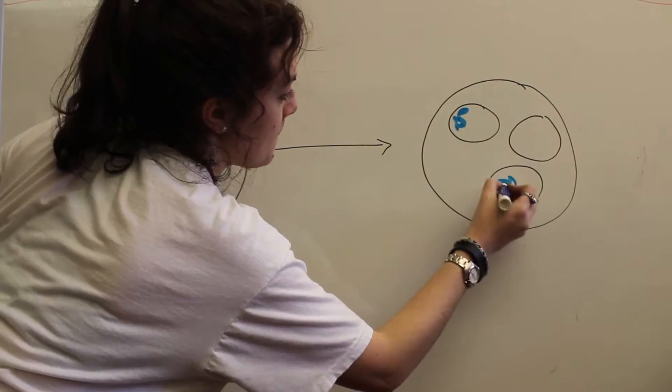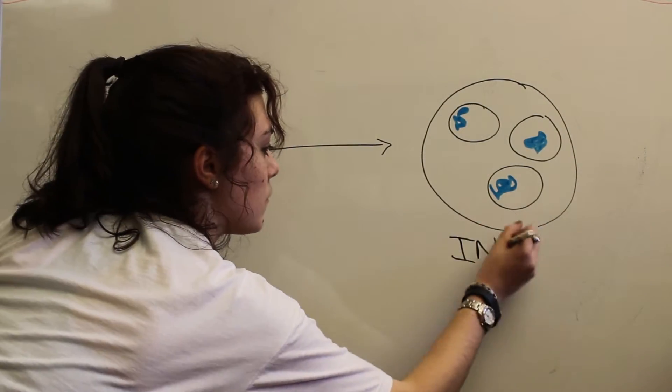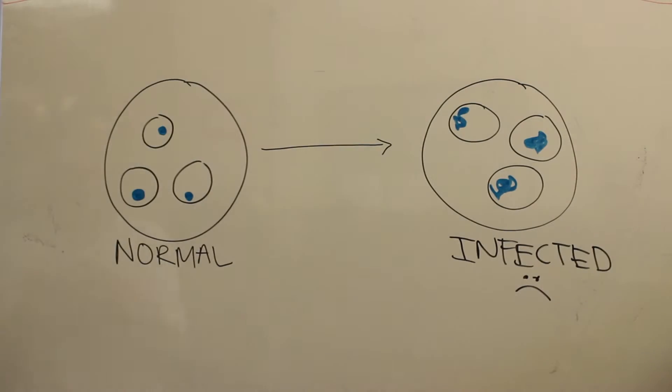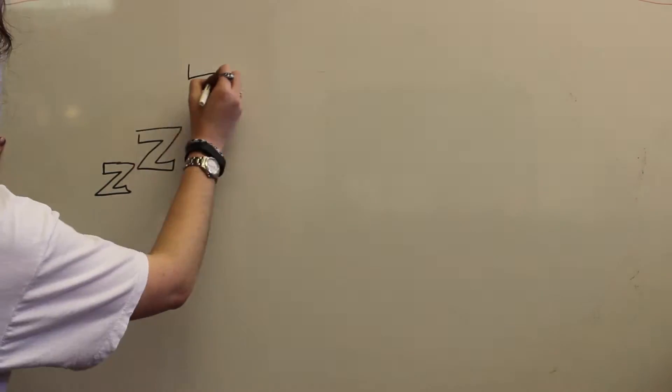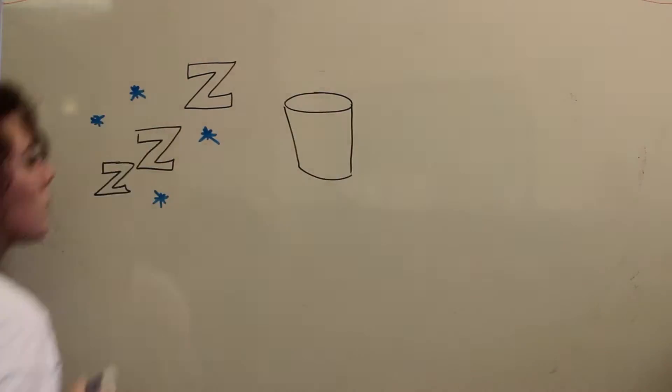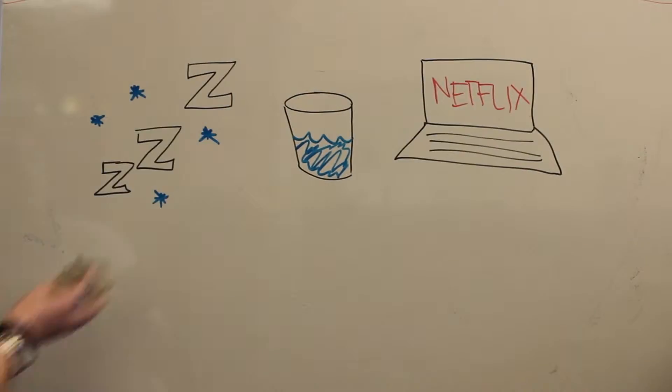Because mono is caused by a virus, which is not alive and therefore can't be killed by antibiotics, the only way to get better is to wait it out. Doctors recommend rest, lots of fluid, and plenty of binge-watching your favorite shows on Netflix.